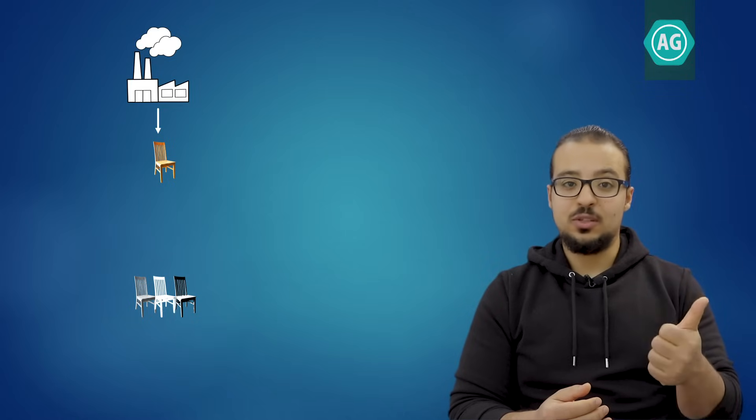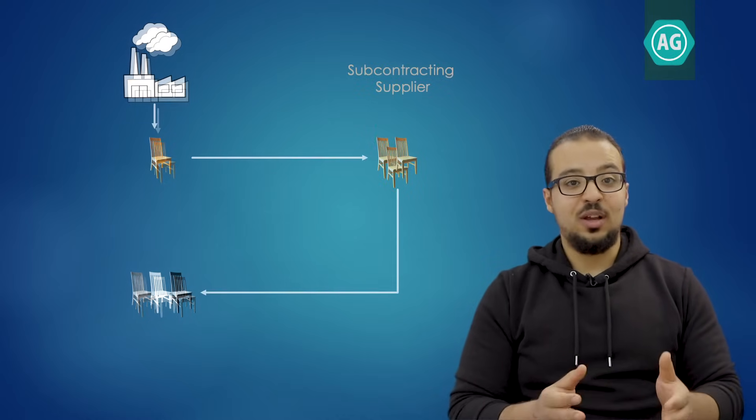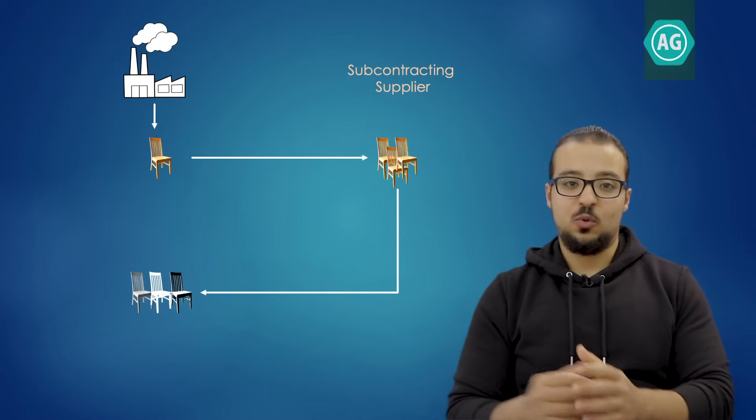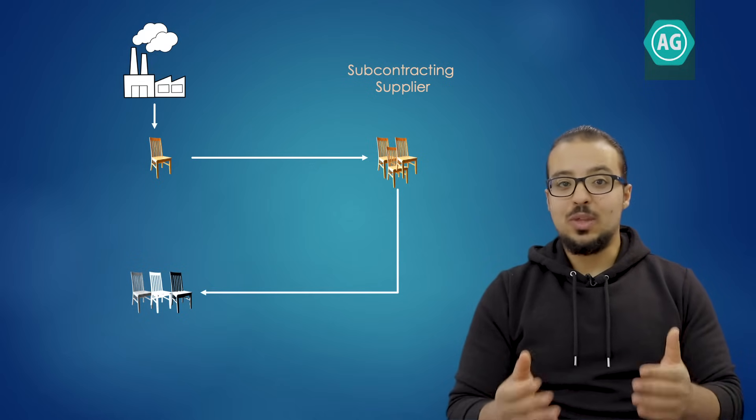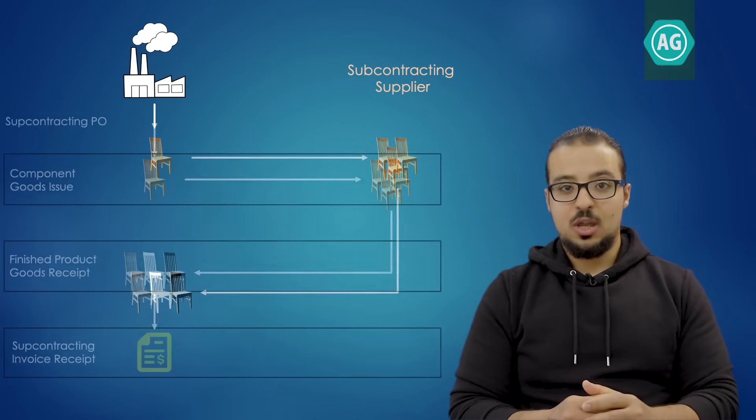To understand the subcontracting process, let's look into a simple example. We are the owners of a factory that manufactures chairs, and after we manufacture our chairs we would like to paint them, but the problem is we don't have the resources or the experience to paint them ourselves. So we are going to find a different supplier to do the painting for us — this is subcontracting.